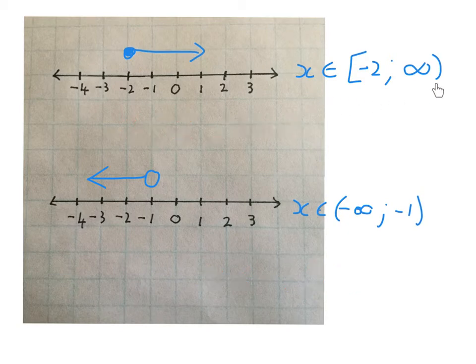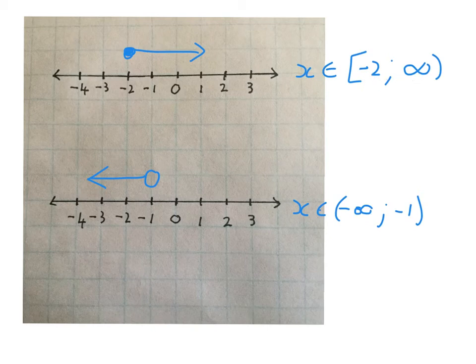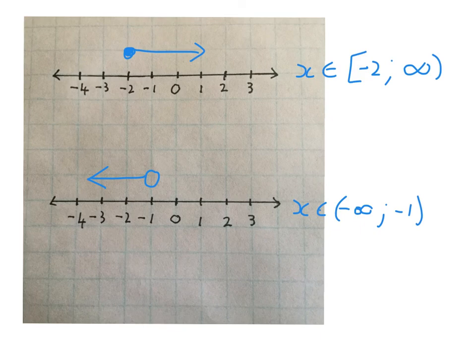To quickly recap interval notation: we learned to work with infinity — always a round bracket. Square bracket indicates including the number; round bracket indicates not that number but everything just to one side of it. So we had square brackets, round brackets, positive infinity, negative infinity, and a new way of writing that was introduced. Enjoy using interval notation from now on in your maths.